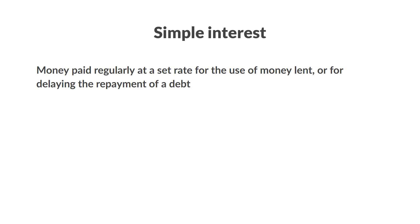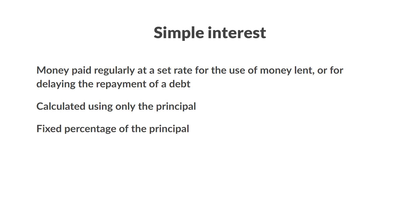Let's start off with simple interest. Interest is often defined as money paid regularly at a set rate for the use of money lent or for delaying the repayment of a debt. Simply put, borrowing money will cost you additional money, as most often you will have to repay more than you borrowed. And the additional amount is called interest. Simple interest is calculated using only the principal of the loan, meaning that simple interest paid or received over a period of time is a fixed percentage of the borrowed or lent principal amount.